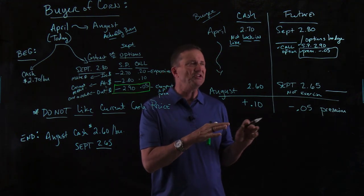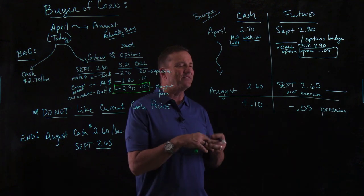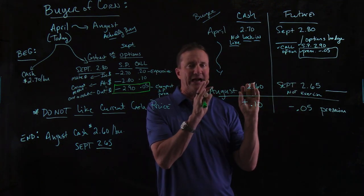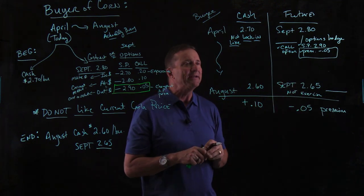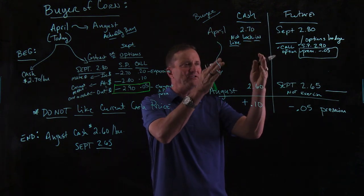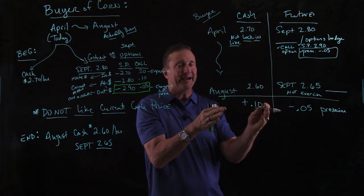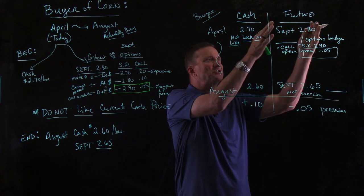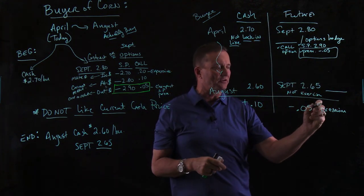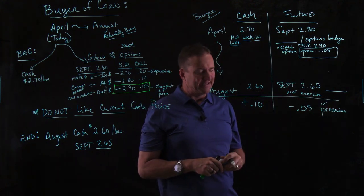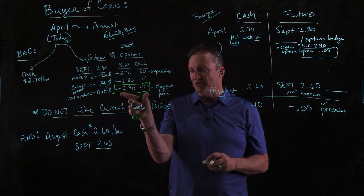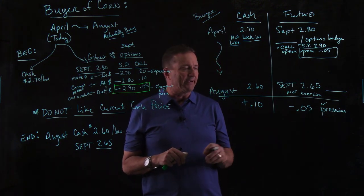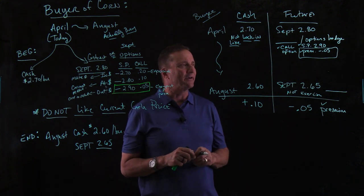An options hedge is very similar to a futures hedge — there's still a seesaw effect. However, with the seesaw effect, it allows you to gain in the cash, which is what you're hoping might happen. And you are still going to lose in the futures, but all you're going to lose is the premium. That's why we choose the cheapest out-of-the-money premium that we can pick.